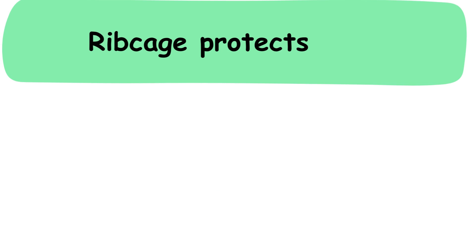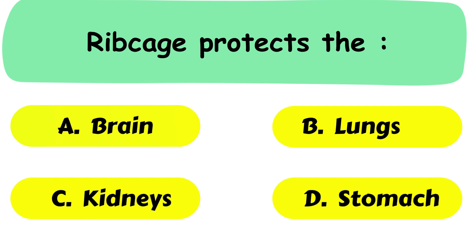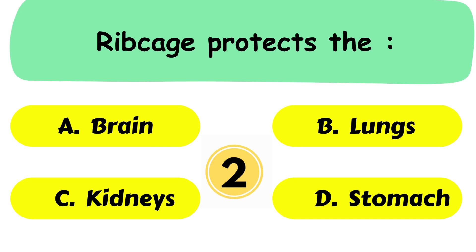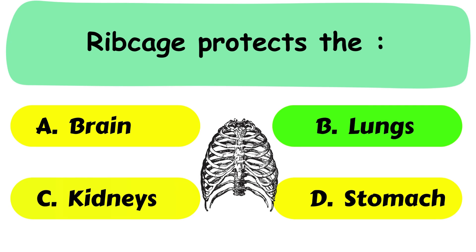Question No. 25. Rib cage protects the A. Brain. B. Lungs. C. Kidney or D. Stomach. The correct answer is option B. Lungs.